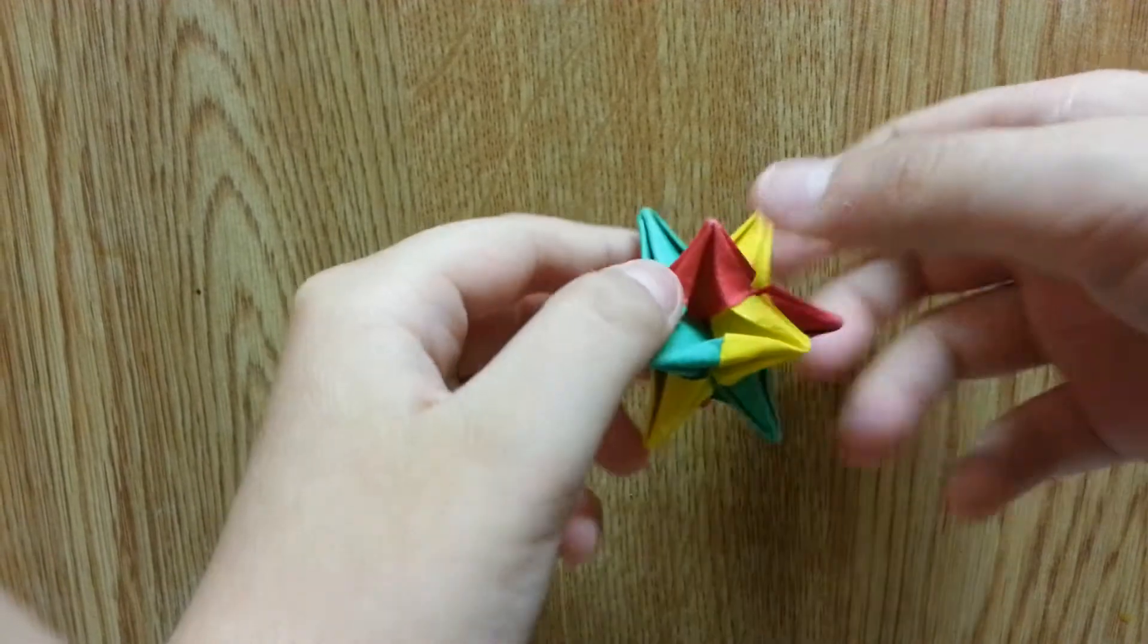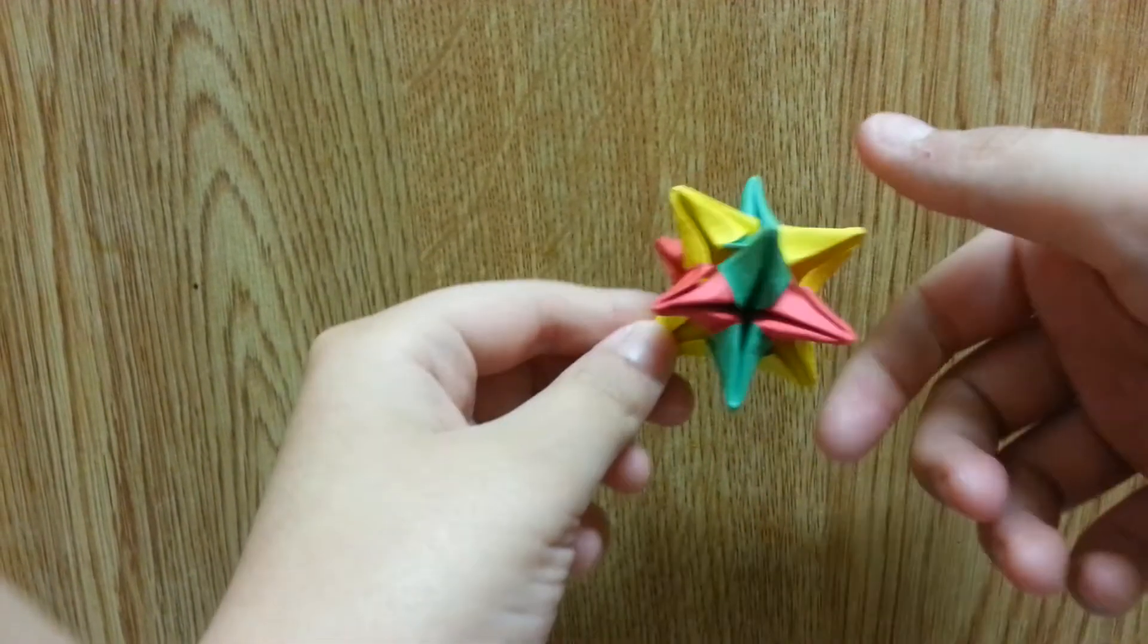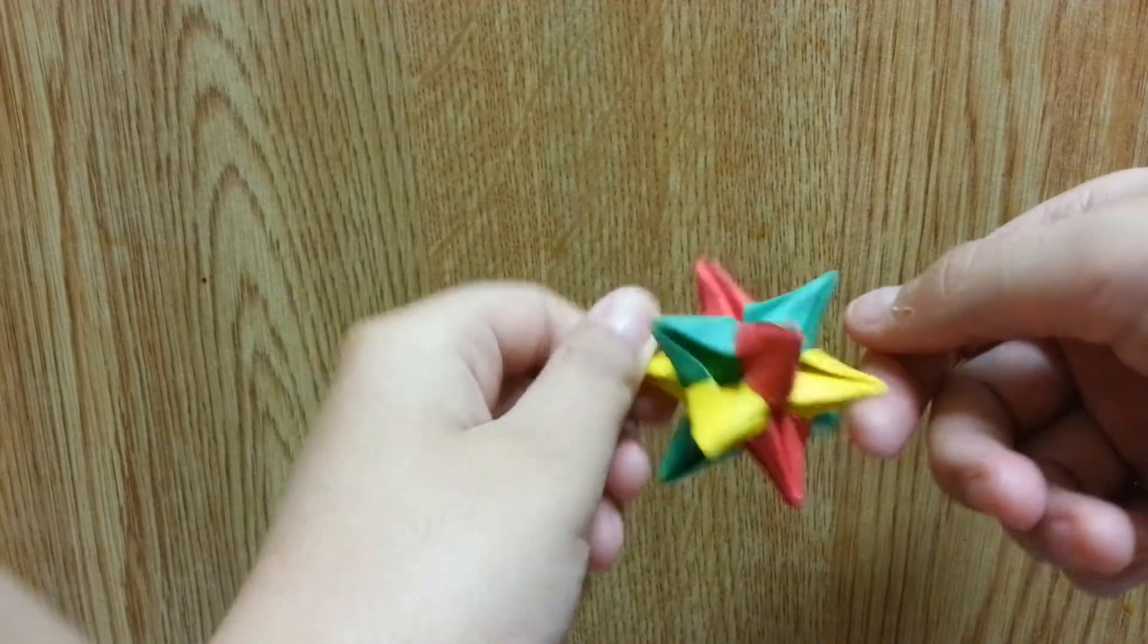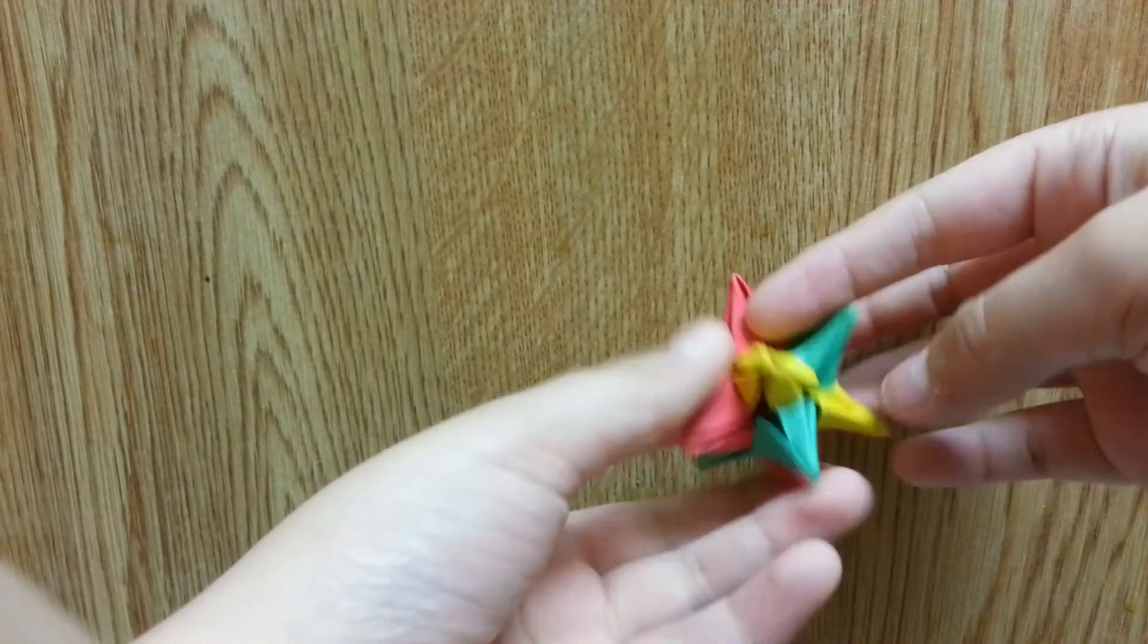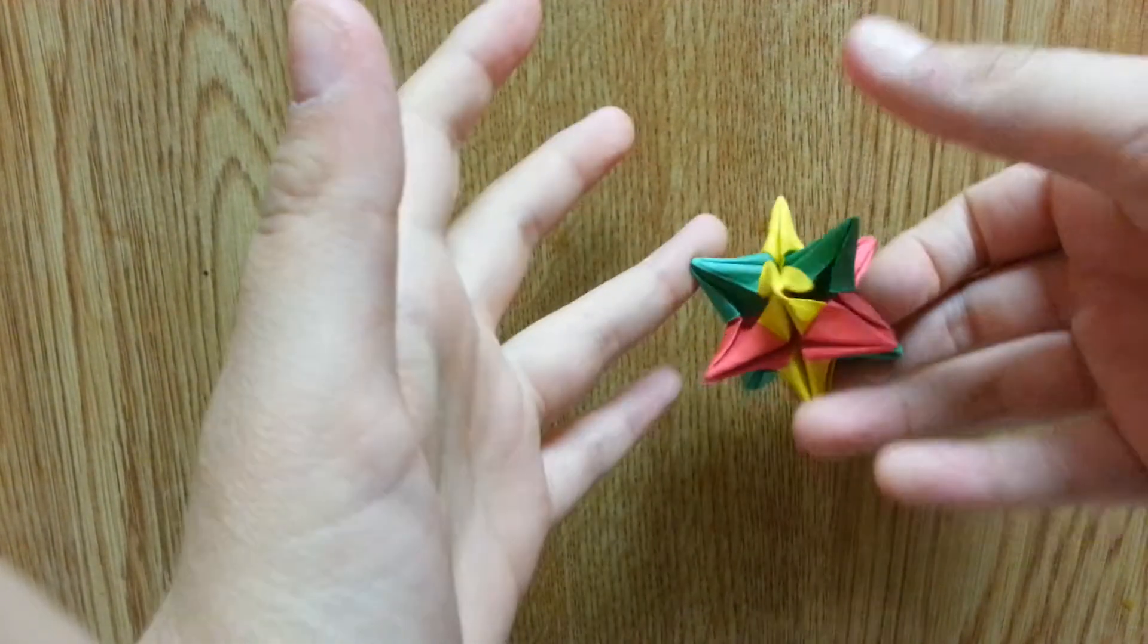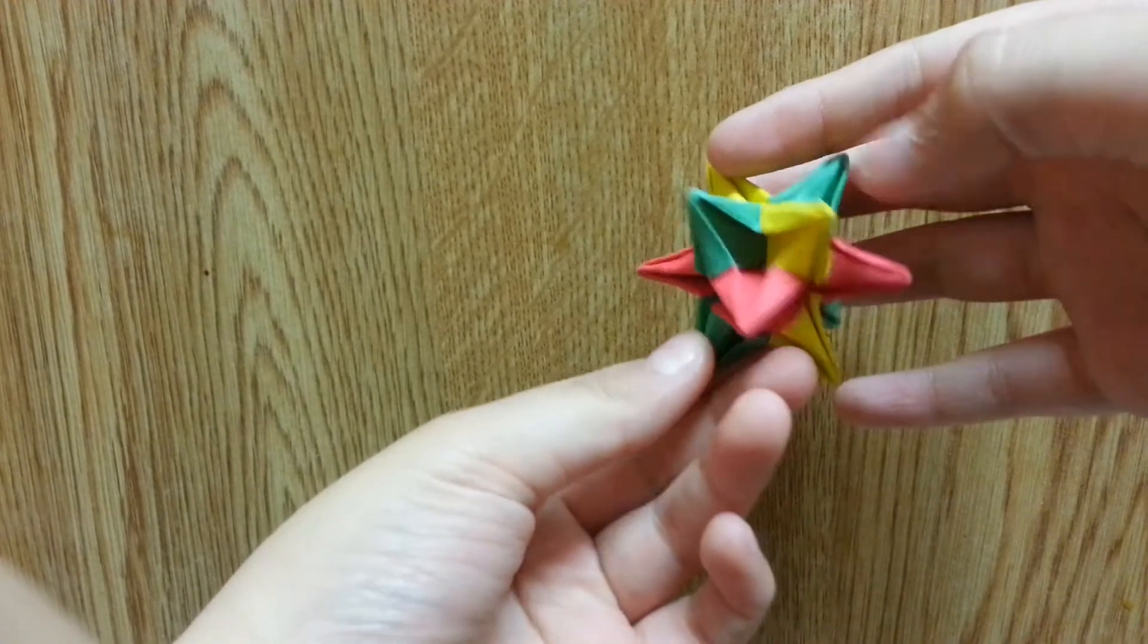This is probably a traditional origami model. This model uses multiple sheets of paper, which means it's a modular type of origami.